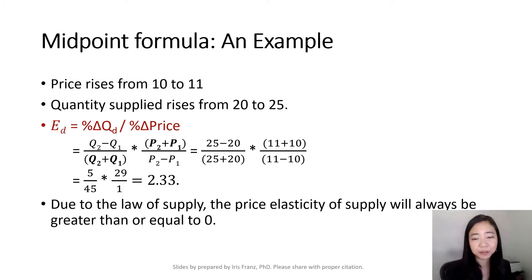Here is an example of the midpoint formula. Suppose your price goes up from 10 to 11, and your quantity supplied goes up from 20 to 25. Then your price elasticity of supply uses the midpoint formula: Q2 minus Q1 over Q2 plus Q1 times P2 plus P1 over P2 minus P1. The rest is just plugging in numbers.